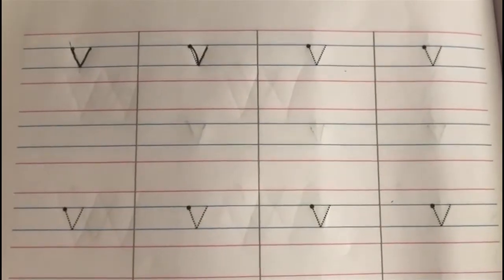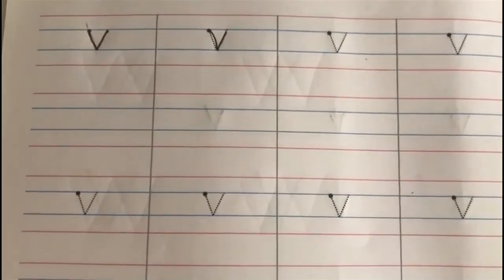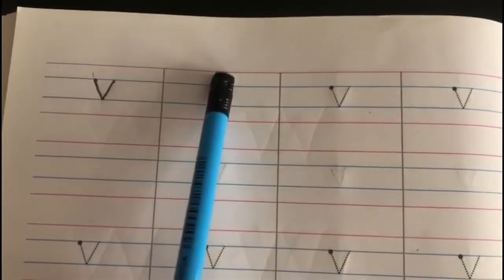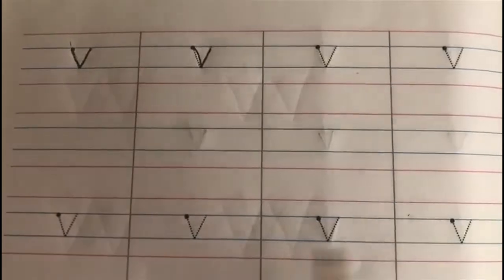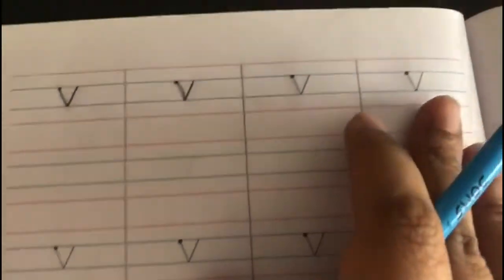For this, I want you to open your English pencil time book to page number 78. Dear parents, write today's date on top of the page. So children, to write V, we are going to first trace one line, then write a line independently.